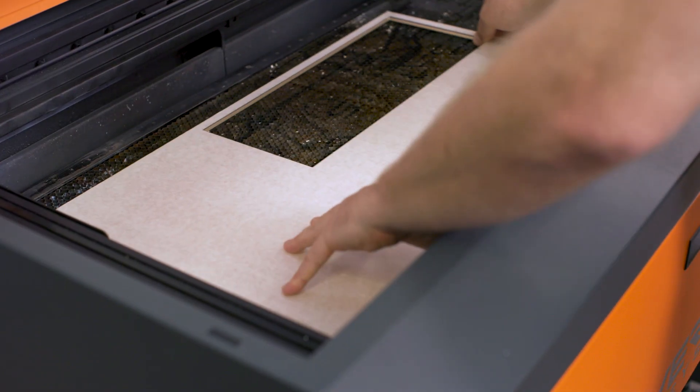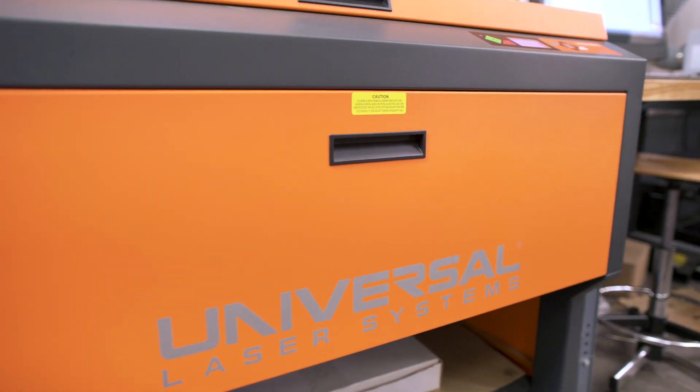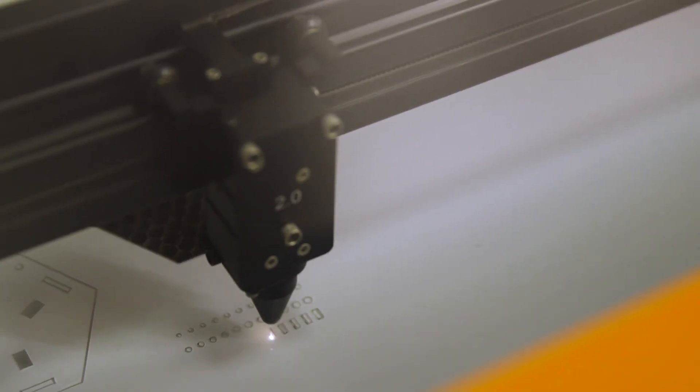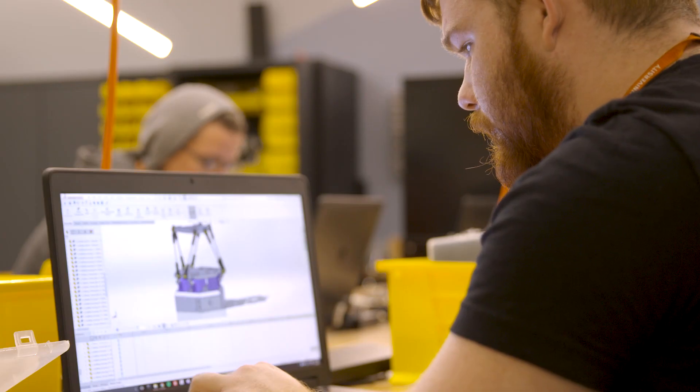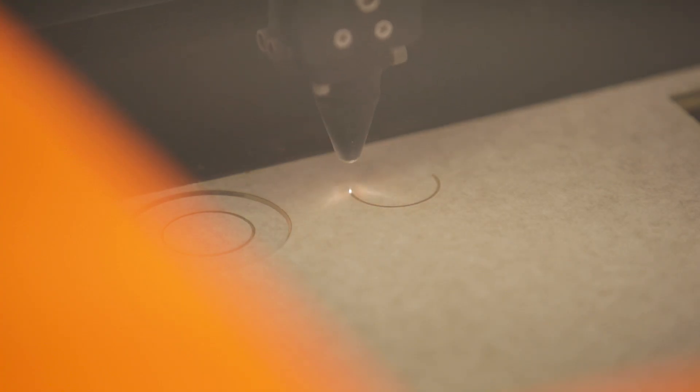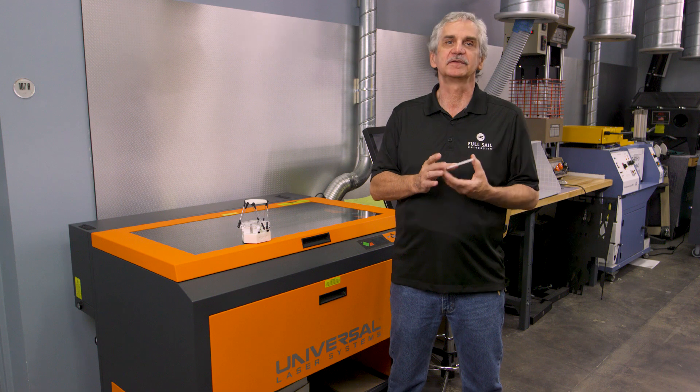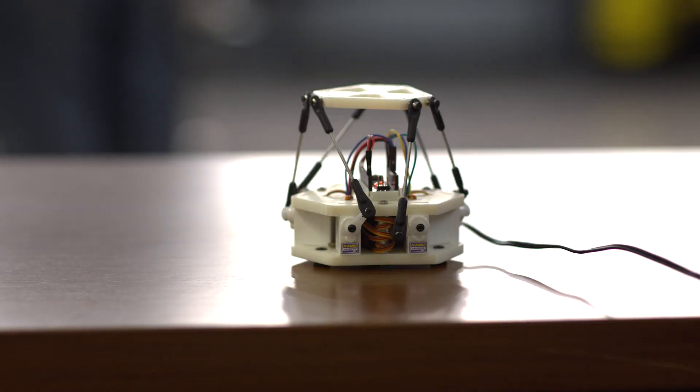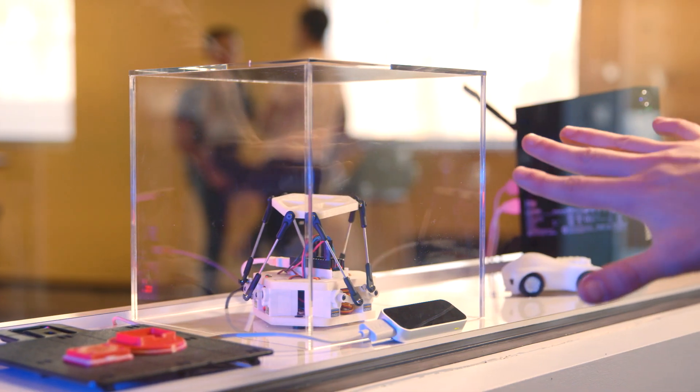On the other side of the fab lab, the universal laser cutter can cleanly cut through material based on designs students create with software. This is our 100 watt laser. It cuts many different materials and students use this to cut this part out of acrylic that they use in one of their projects, which is this motion platform.